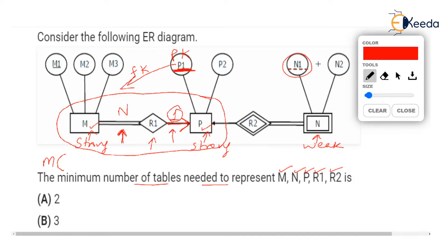Table M will have M1 as primary key, M2 and M3 as other attributes, and one more column called P1. This P1 is not underlined because it is a foreign key, which references the primary key P1 of entity P.